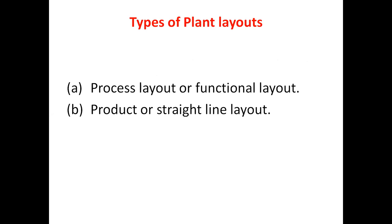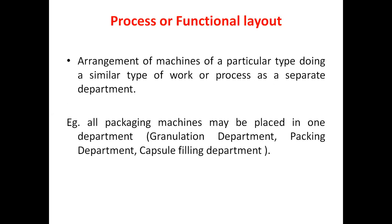There are two different types of plant layouts: one is the process layout or functional layout, and the other is the straight-line layout or product layout. Those are the two primary types of plant layouts.